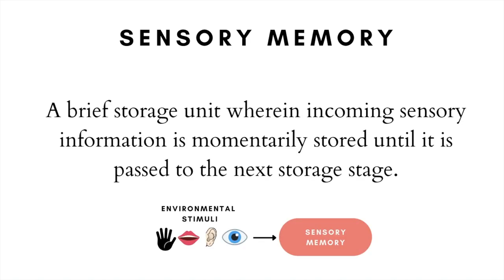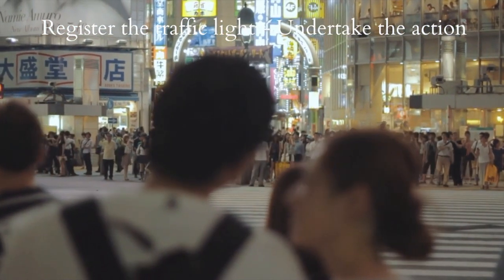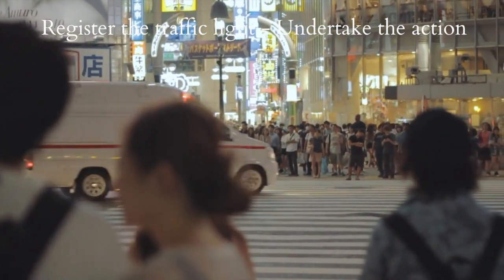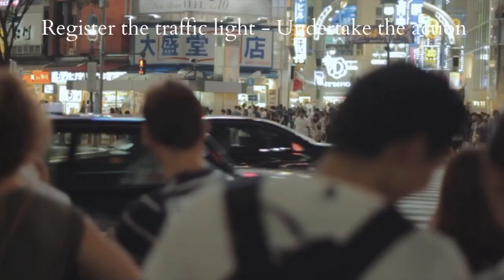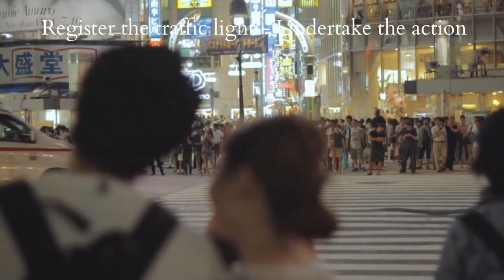The first stage is the sensory memory, also referred to as the sensory input stage. Sensory memory refers to a brief memory storage unit in which incoming information that enters our cognition via sensory portals — for example, vision — is momentarily stored until it is passed to the next storage space, which according to the Atkinson and Shiffrin model would be the short-term memory. For example, imagine you're crossing a road and briefly register the color of a traffic light in order to discern whether to cross or not.